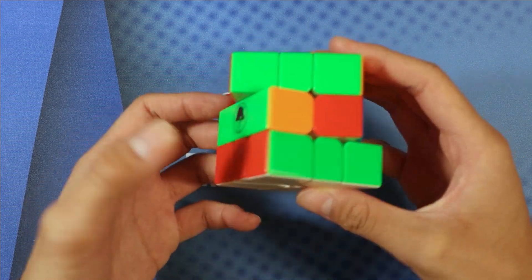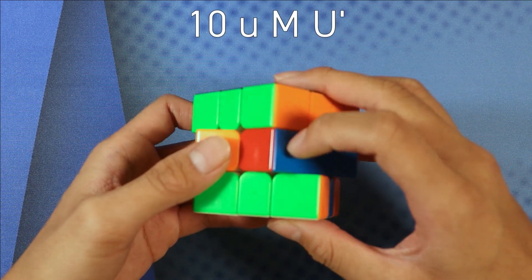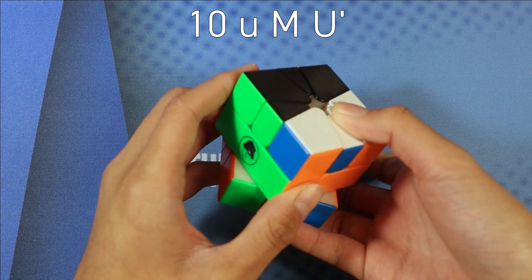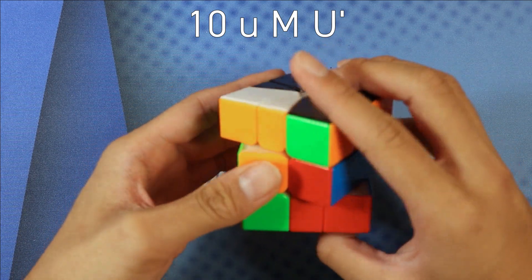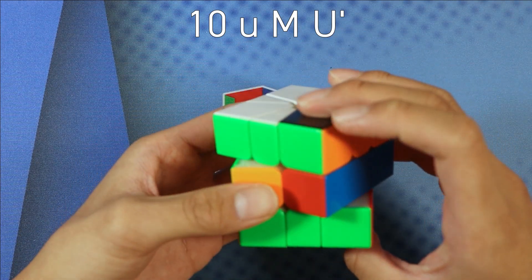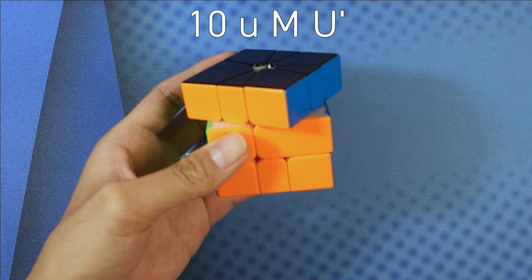So from here, what I did was I just did edge-edge, this L here, so I just do a slash, U, small U, M, U, and then U-2-prime, and then U-D-prime immediately.